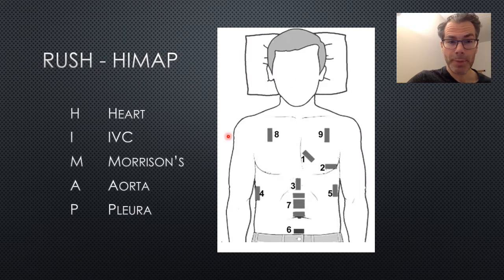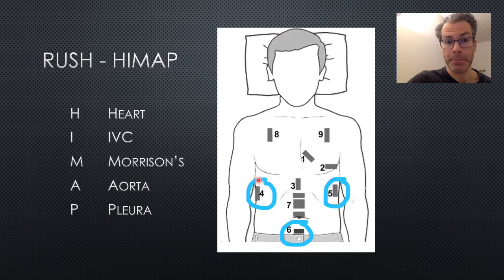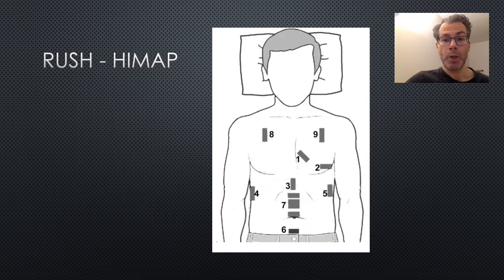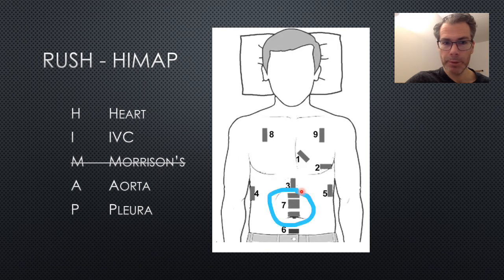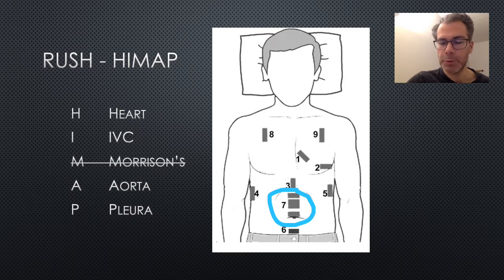The next step in HI-MAP is Morrison's pouch for free fluid, looking at the right upper quadrant, left upper quadrant, and pelvis — just like a FAST exam. The fourth step is the aorta, looking in the middle of the abdomen for both aneurysm and dissection. In this demographic — a 15-year-old — these weren't particularly relevant, so we decided to skip over these parts of the protocol.